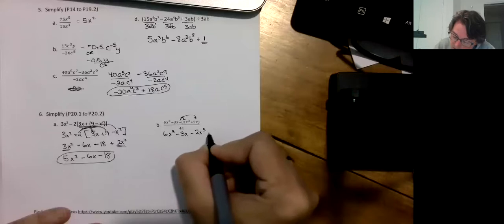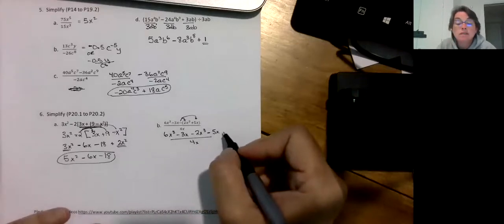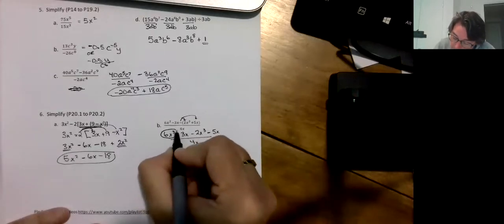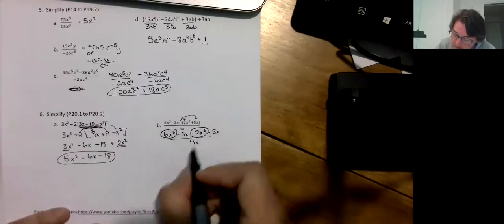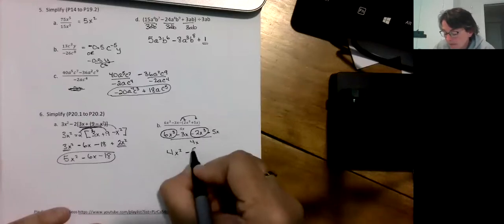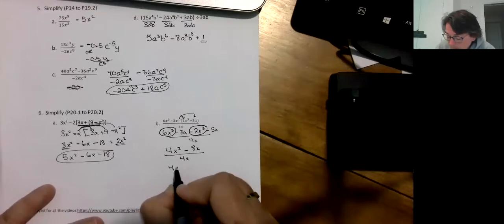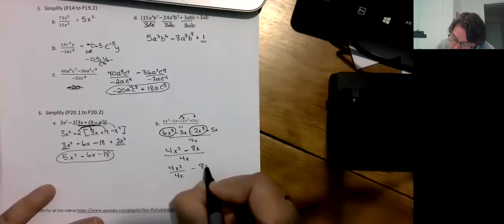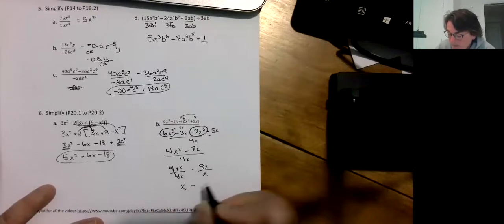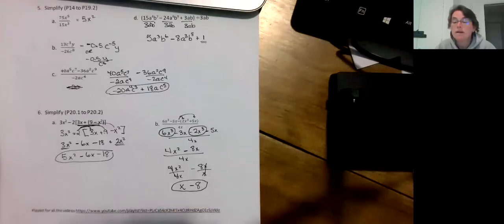Remember with ones like this you're going to simplify the top as much as you can. There's nothing to do on the bottom. So 6 minus 2 is 4x³, and minus 3 minus 5 so it's going to be minus 8x, divided by 4x. Now I'm going to divide and split it out. So 4x³ divided by 4x, that's going to cancel to 1, I'm just going to get x² left. Minus 8x divided by 4x, the x is going to cancel, so minus 2. So there we are.